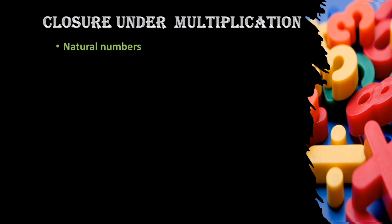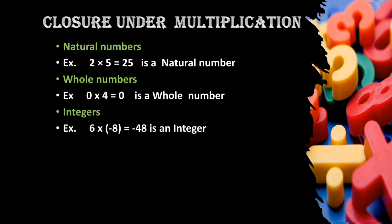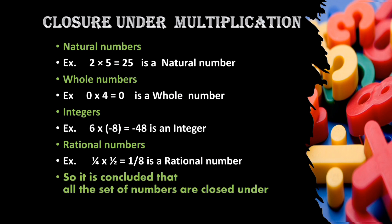Closure under multiplication. For natural numbers, when we multiply any two or more natural numbers, the product is always a natural number. When two or more whole numbers are multiplied, we get a product that is a whole number. When any two or more integers are multiplied, the product is always an integer. When two or more rational numbers are multiplied, we always get a rational number as the product. So it is concluded that all sets of numbers — natural numbers, whole numbers, integers, and rational numbers — are closed under multiplication.